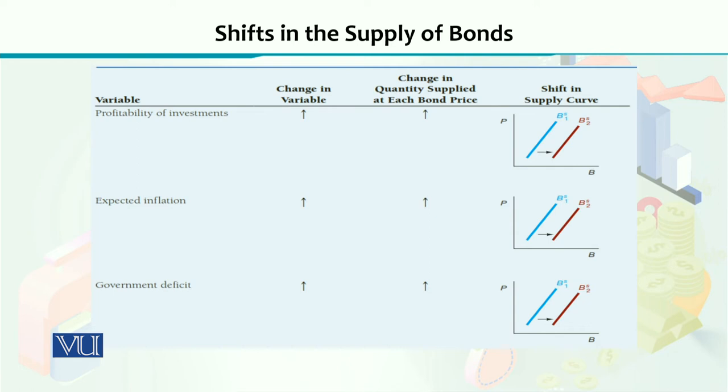In this way, if you are seeing that inflation is increasing in the future, your quantity supplied will increase and your supply curve will shift forward. As a result, the supply curve is shown as the brown line, while the initial line was blue.